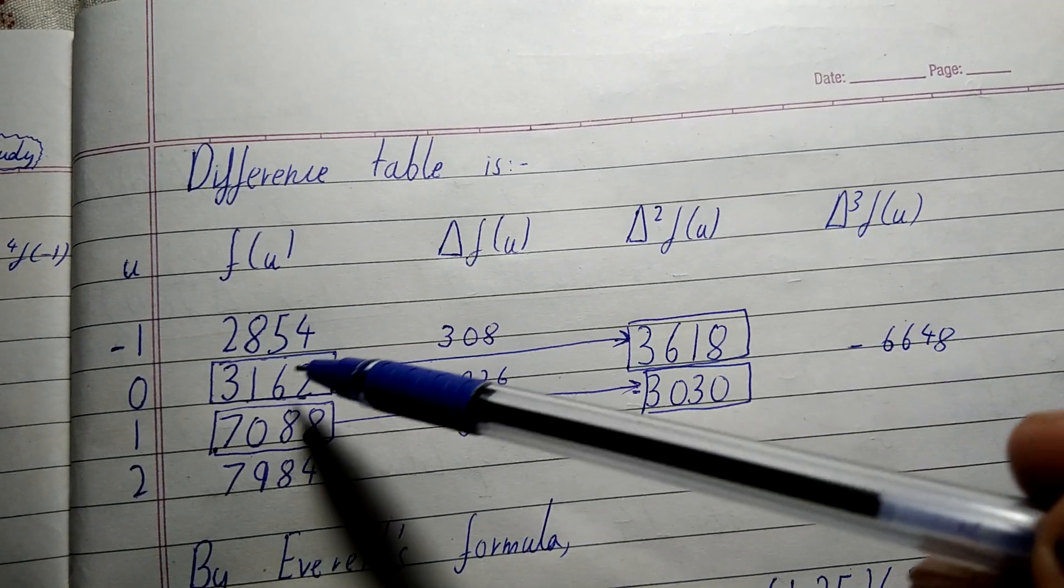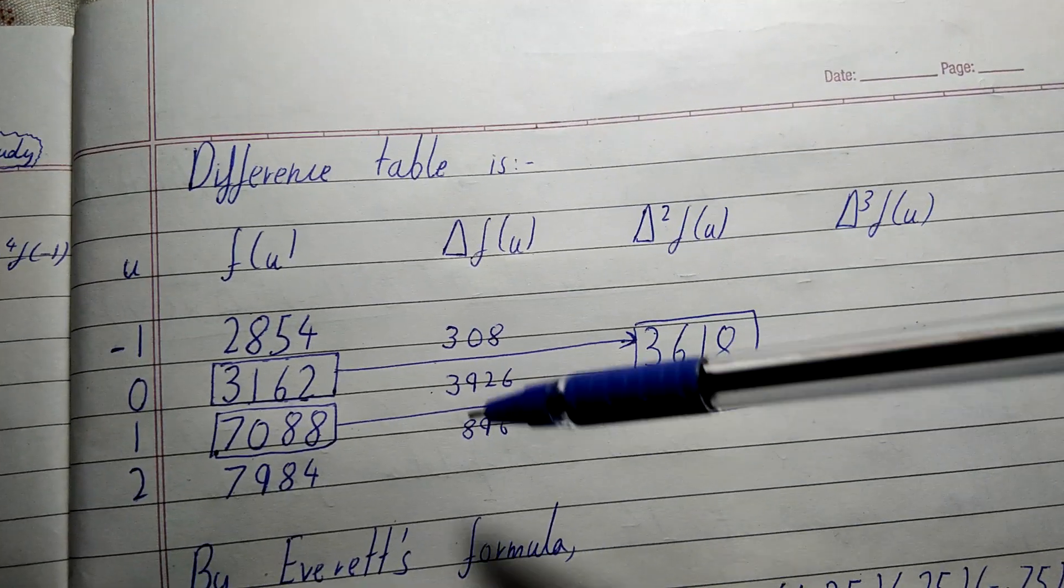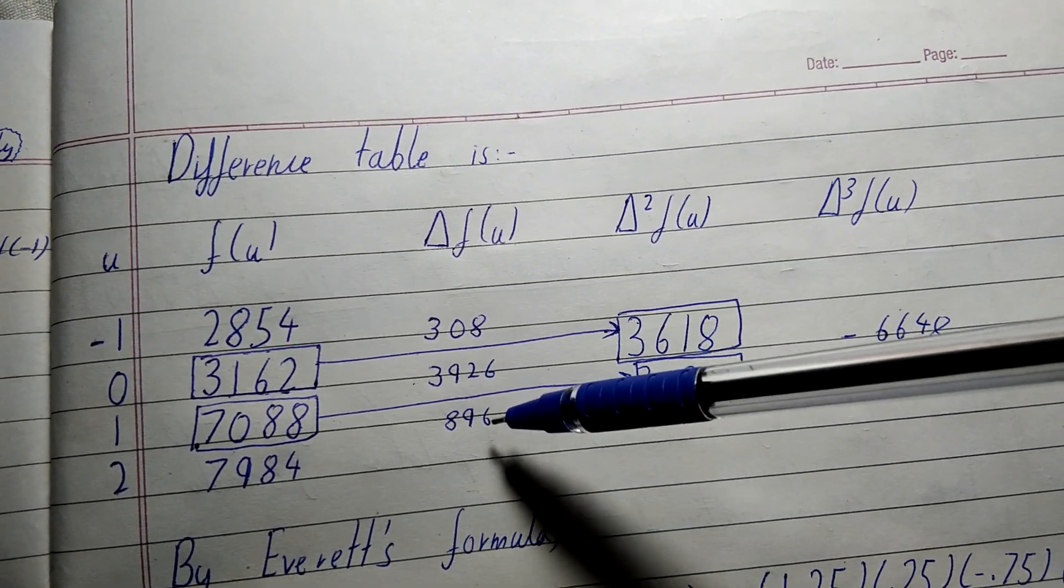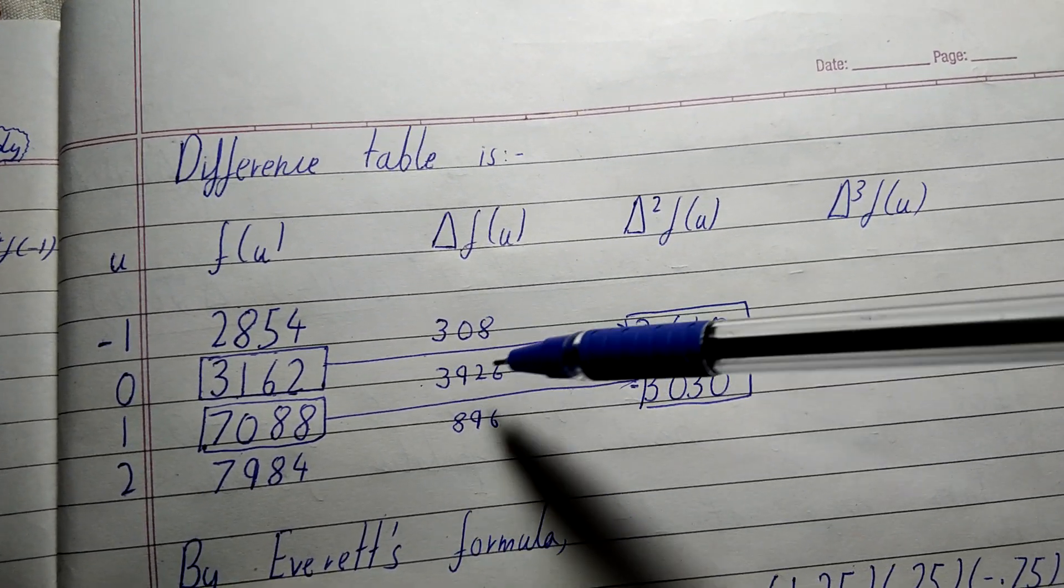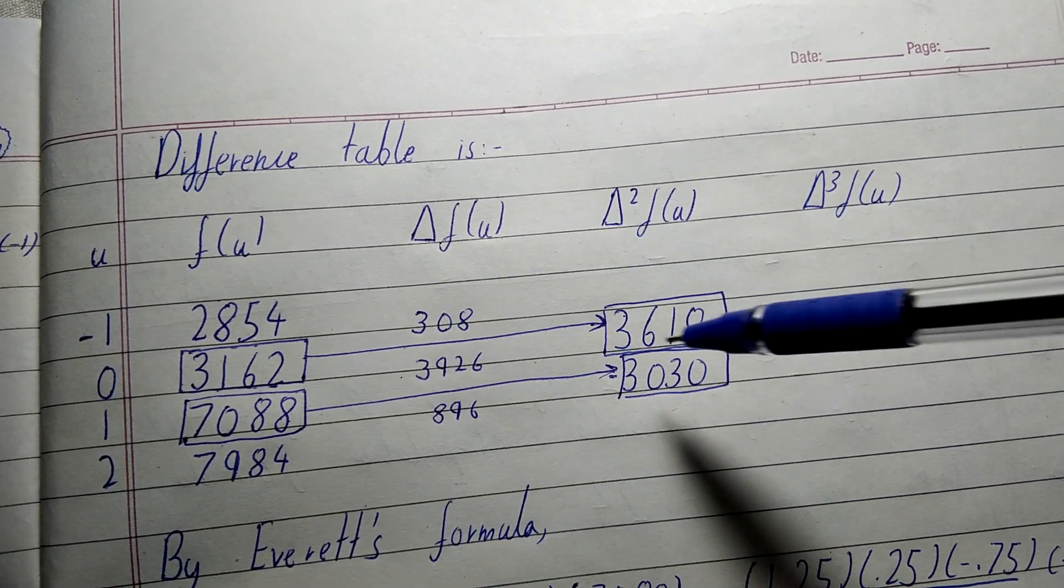3162 - 2854 = 308. Now further on, again we will do the same thing: 896 - 3926 = -3030. 3926 - 308 = +3618.